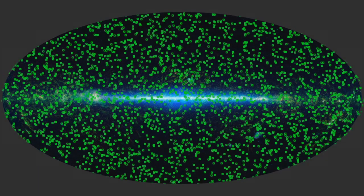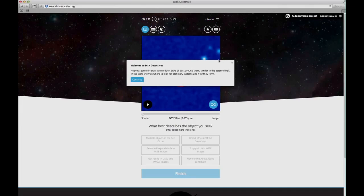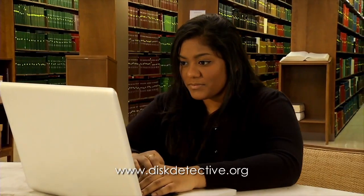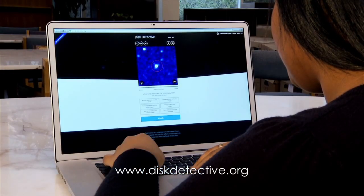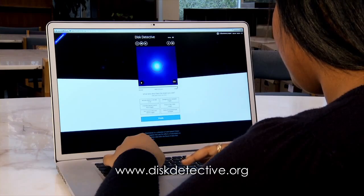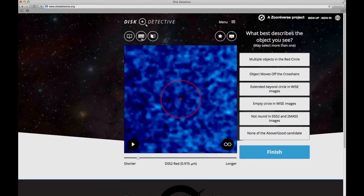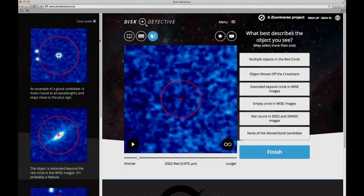That's why NASA and Zooniverse are launching Disk Detective, a new citizen science project. At diskdetective.org, you'll see animated flipbooks of images from the WISE All-Sky Survey and other projects. Some images show protoplanetary and debris disks, the homes of extrasolar planets.